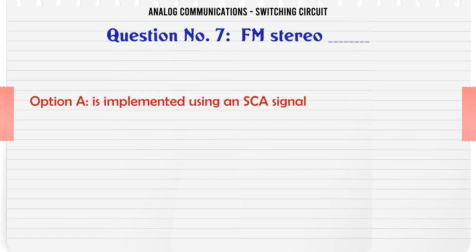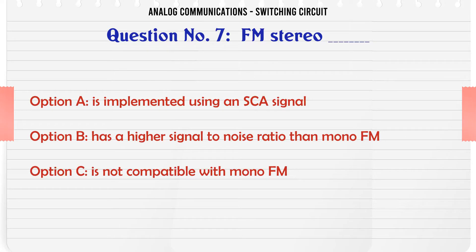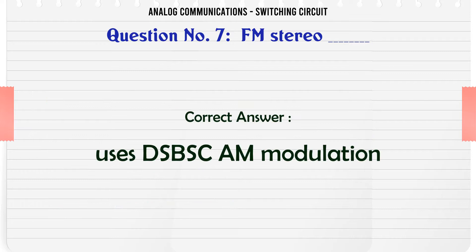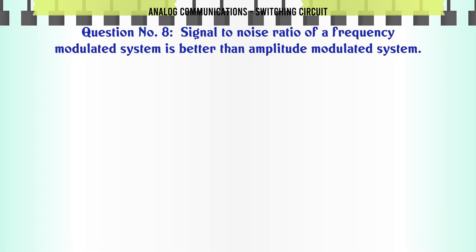Question: FM stereo. Option A: Is implemented using an SCA signal. Option B: Has a higher signal to noise ratio than mono FM. Option C: Is not compatible with mono FM. Option D: Uses DSBSCAM modulation. The correct answer is Uses DSBSCAM modulation.